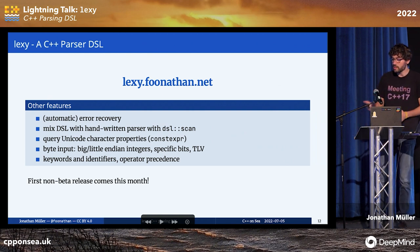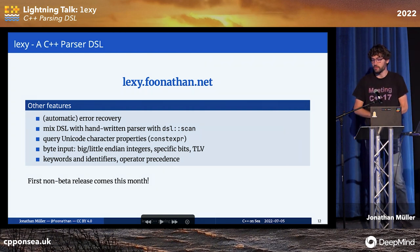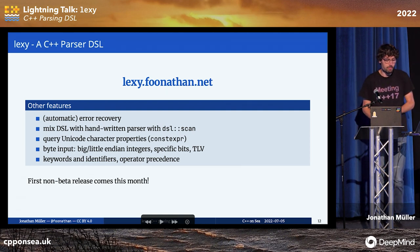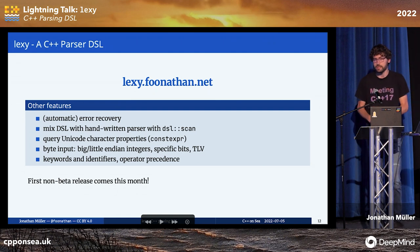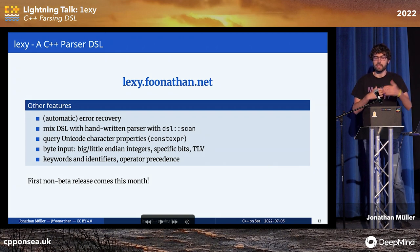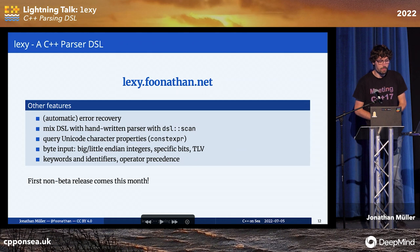You can query Unicode character properties at compile time, parse byte input — big or little endian integers, specific bits, or the classic pattern of type, length, and then that many bytes. I'm currently using Lexi in my thesis to parse an actual programming language, so it has support for keywords and identifiers, operator precedence, all in a convenient DSL so you don't have to worry about the implementation details.